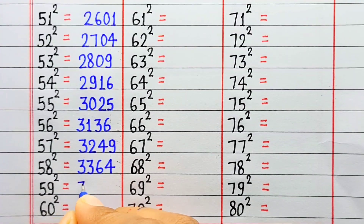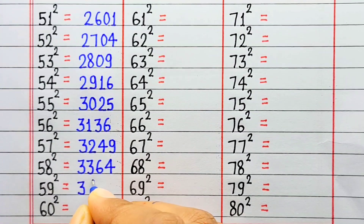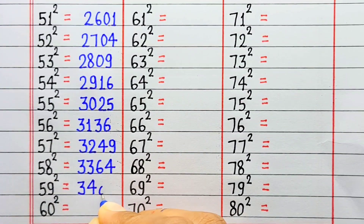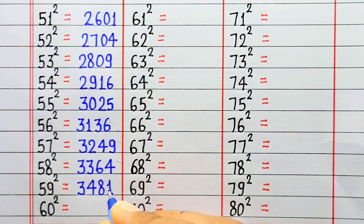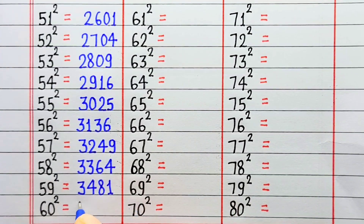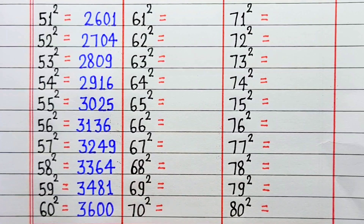Square of 59 is 3481. Square of 60 is 3600.